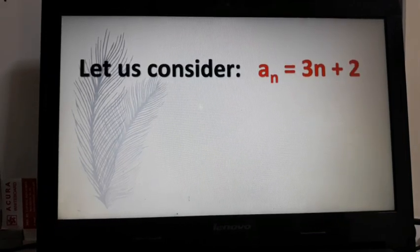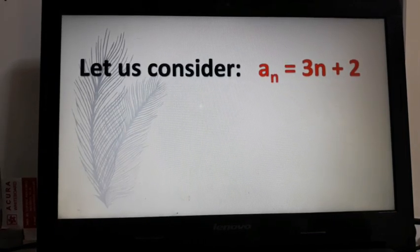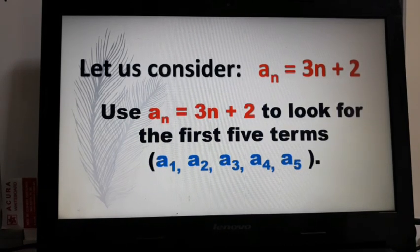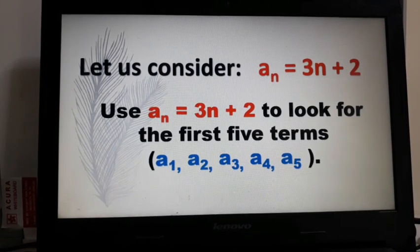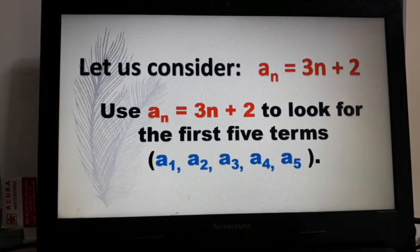Let us consider a_n equals 3n plus 2. Our problem says, use a_n equals 3n plus 2 to look for the first five terms.